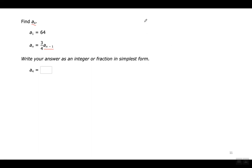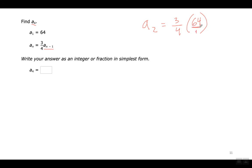First I've got to find the second term and the third term. Para encontrarlo, primero necesito el segundo término y el tercer término. So the second term is going to be 3 over 4 times the first term, which is 64. Let's multiply these fractions — turn 64 into a fraction by putting a 1 on the bottom. Cambien el 64 a una fracción poniéndole un 1 debajo.